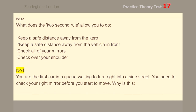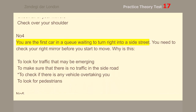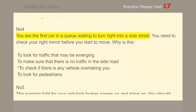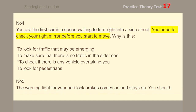Number 4. You are the first car in a queue waiting to turn right into a side street. You need to check your right mirror before you start to move. Why? To check if there is any vehicle overtaking you.